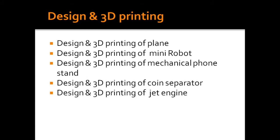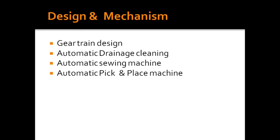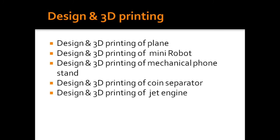Next one is design and 3D printing. For example, design and 3D printing of a small aeroplane — you can design it and take a 3D print, but it should be a little bit different from existing designs. Also, design and 3D printing of mini robot, mechanical phone stand, coin separator, and jet engine. In 3D printing, we are just taking a replica — like a miniature — of the original project.